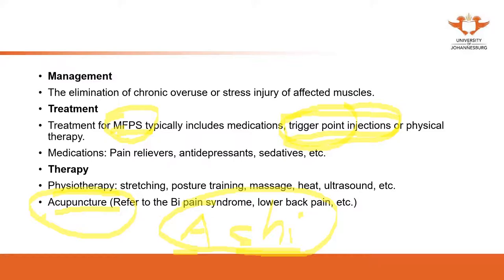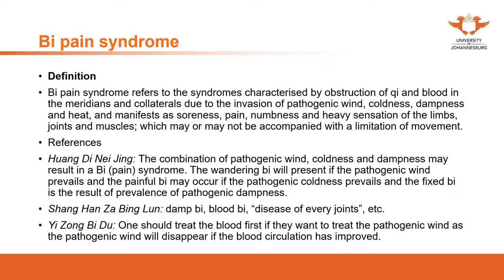So next, we're going to discuss Bi pain syndrome and lower back pain — we're going to put these in one category. Why do we introduce myofascial pain syndrome together with Bi pain syndrome or lower back pain? Because these are very closely related. Firstly, what's Bi pain syndrome? Bi — pronounced as 'Bi' — is the term Bi pain syndrome. In Mandarin, we call it Bi syndrome. This is the direct translation.